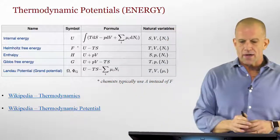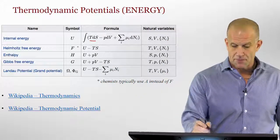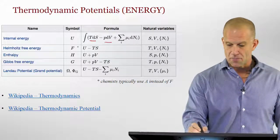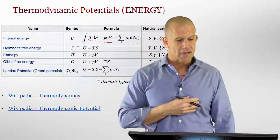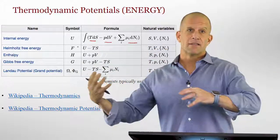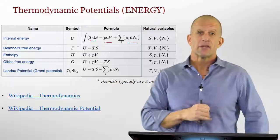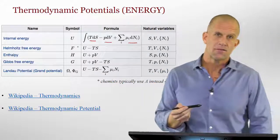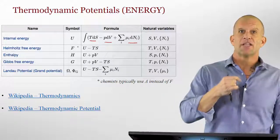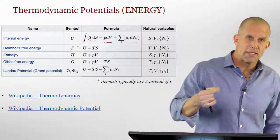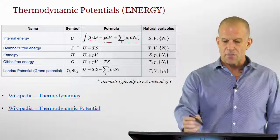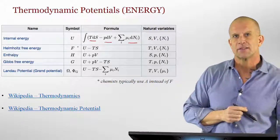Each one of these conjugate variables — temperature into entropy, pressure into volume, chemical potential into number of moles — come as conjugate pairs and get added or subtracted to the overall energy. Each one of them is an energy term itself: pressure times volume is an energy, temperature times the change in entropy is an energy, chemical potential times the number of moles of each component is an energy. We just add or subtract those to give the overall energy of the system.